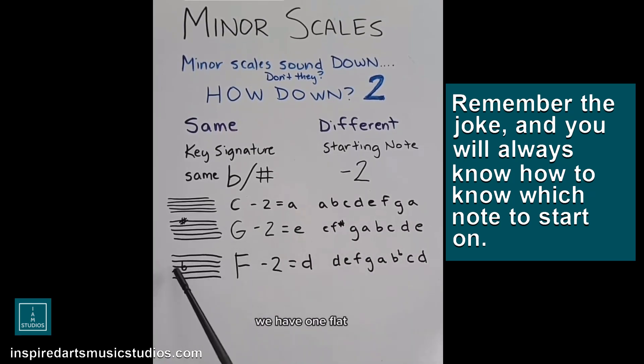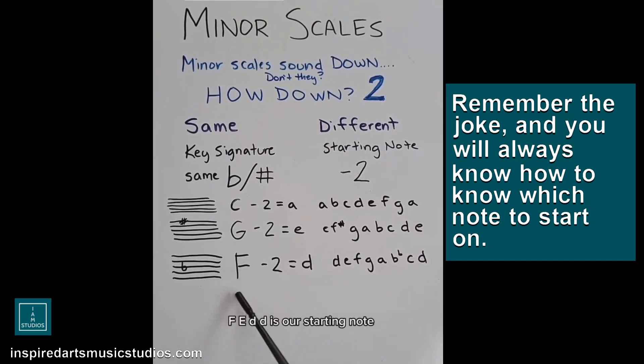For the key of F, we have one flat, and that is B flat, but F down to F, E, D. D is our starting note, but we still have B flat as our key signature note. So we go from D, we end on D, and that's the D natural minor.